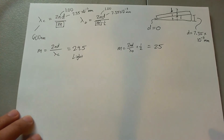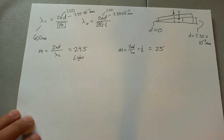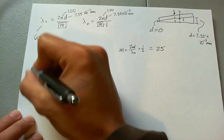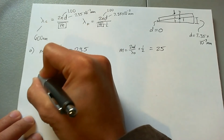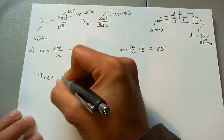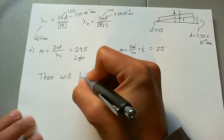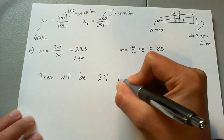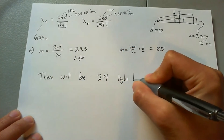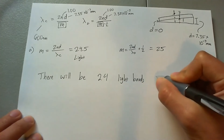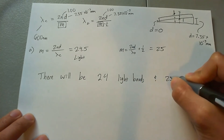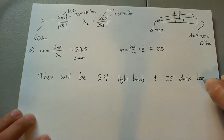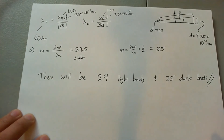So the answer to Part A — how many light and dark bands will there be — is 24 light bands and 25 dark bands.